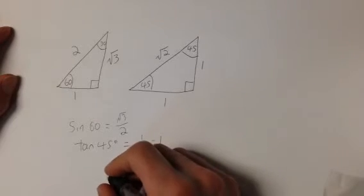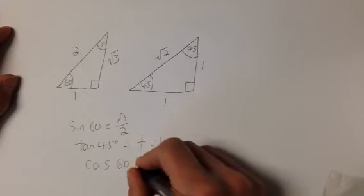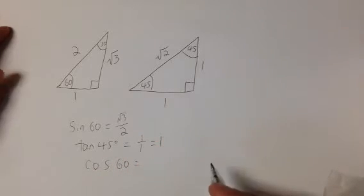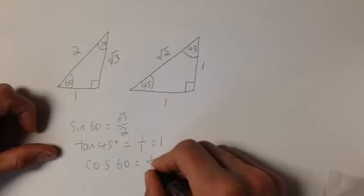One last example, the cosine of 60 degrees, which remember is adjacent over hypotenuse. The cosine of 60 degrees is 1 over 2.